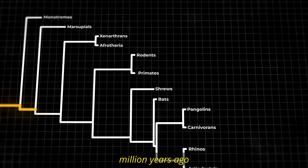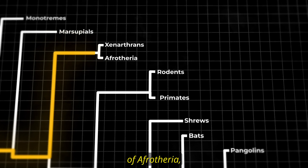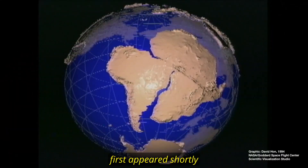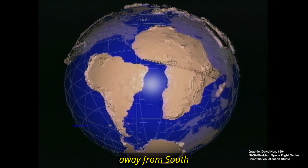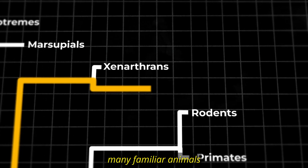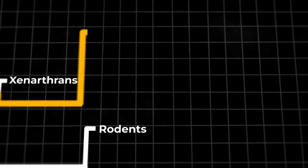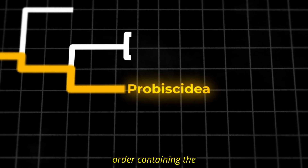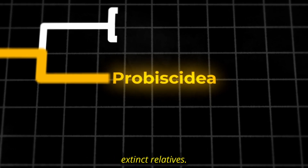Starting 100 million years ago with the emergence of Afrotheria, one of the six major clades of mammals that first appeared shortly after Africa split away from South America. This group contains many familiar animals associated with Africa. From within Afrotheria, the branch Proboscidea emerged — the order containing the elephants and their extinct relatives.